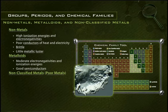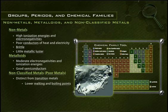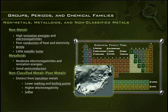Non-classified metals, sometimes referred to as poor metals, are distinct from transition metals in that they generally have lower melting and boiling points, higher electronegativities, and are softer. However, non-classified metals have much higher boiling points than the metalloids in the same periods.